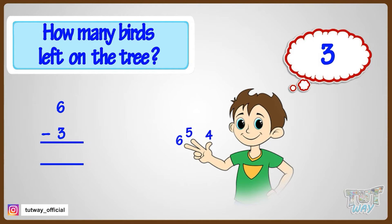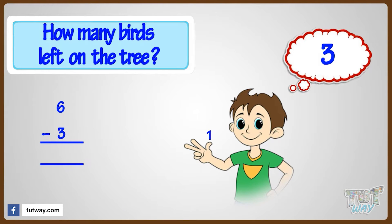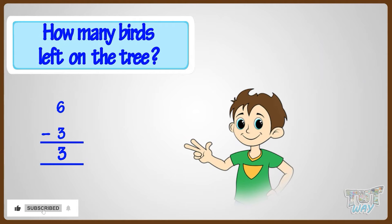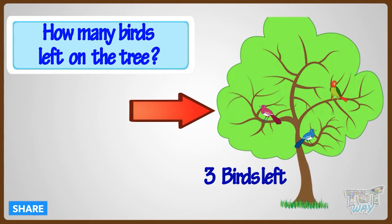Now count the fingers: one, two, three. Yeah! Six minus three equals three. We did it! Three birds left.